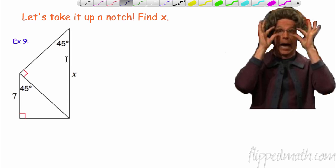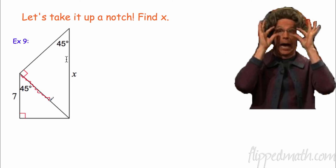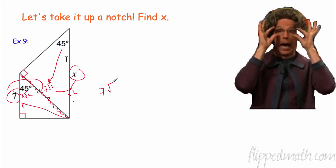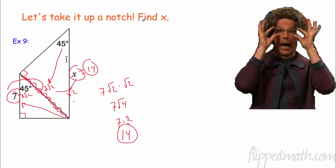Let's take it up a notch. We have a compound triangle — two triangles sharing a side — and we need to find the common side first. Going from the short leg (across from 45°) to the hypotenuse, I multiply by √2: 7 × √2 = 7√2. That common side is also a short leg in the second 45-45-90, so again multiply by √2: 7√2 × √2 = 7√4 = 7 × 2 = 14.